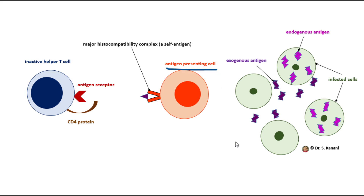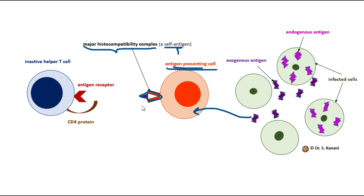An antigen-presenting cell can phagocytize the exogenous antigen and, carefully without infecting itself, breaks it down into smaller pieces named antigen fragment peptides. In its endoplasmic reticulum, the antigen-presenting cell builds a self-antigen called major histocompatibility complex (MHC), and then — again without infecting itself — binds its self-antigen to a piece of that non-self exogenous antigen to build a complex that T-cells can read.